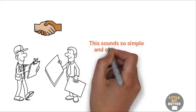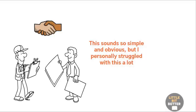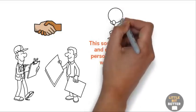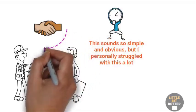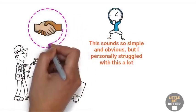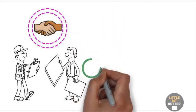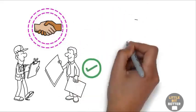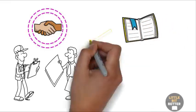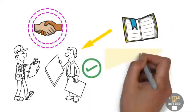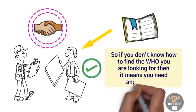This sounds so simple and obvious, but I personally struggled with this a lot. Whenever I wanted to hire someone, I would spend hours trying to figure out how to do it. After a while, I would either quit searching and go back to doing the job myself because I couldn't find the person I was looking for, or I would find someone, but he wouldn't be the right fit for the job. After reading this book, I realized that what I needed to do was find the person who knows how to hire the person I needed. So if you don't know how to find the who you are looking for, then it means you need another who.